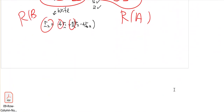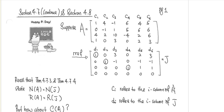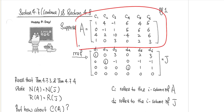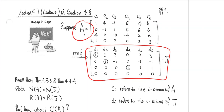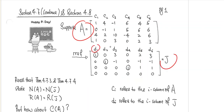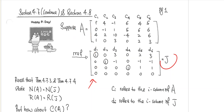That covers the null space and row space of A. There is one thing missing: what about the column space? The column space is slightly trickier. Suppose we have a matrix A with six different columns — column 1 through column 6. You can use a calculator to obtain the RREF of this matrix A, which I'll call J. I'll label the columns of J as D1 through D6, and the columns of A as C1 through C6.